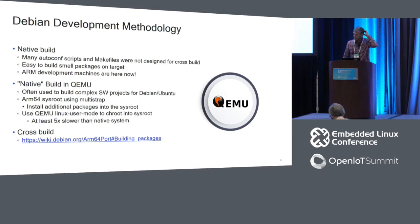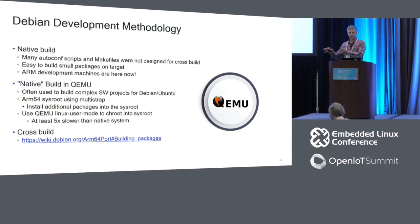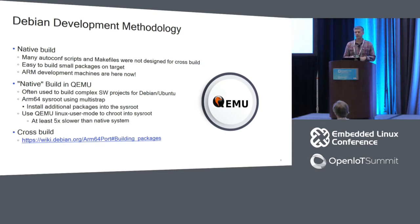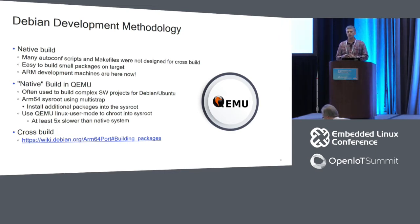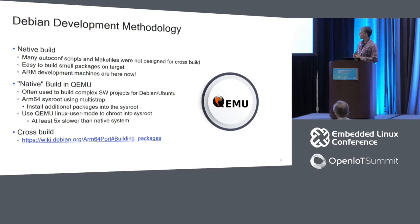The Debian build methodology has historically been native build — you build it natively on the target platform. For a simple project on a 410C or Raspberry Pi, it's simple to just build on the board itself, install the necessary build packages, and go. However, if you want to build Chrome or Clang, you're not going to do that on most embedded boards. An alternative is native build in QEMU — you get access to a lot more RAM and can install all the packages you need.